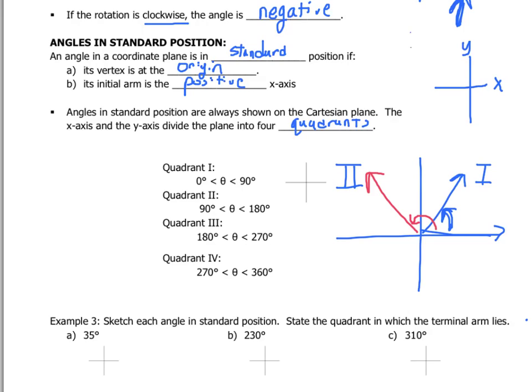An angle in quadrant three starts on the positive x-axis and rotates all the way around into the third quadrant — that must be between 180 and 270 degrees. And finally, quadrant four: any angle in quadrant four began on the positive x-axis and rotated all the way to a final terminal spot, so that huge angle must be between 270 and 360 degrees.